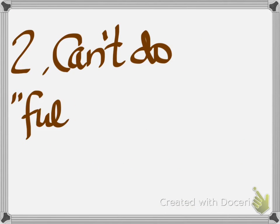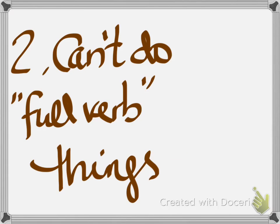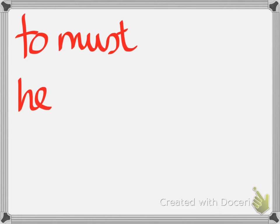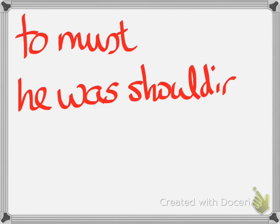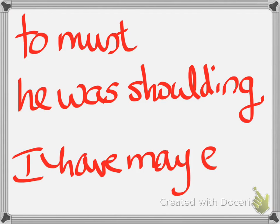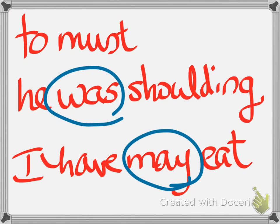Second mistake? You can't do the full verb things that you could do with a regular verb. For example, I can't say to must, he was shoulding, I have may eat. Okay? Can't do an infinitive, can't make a continuous tense.